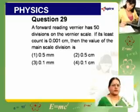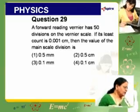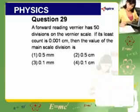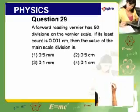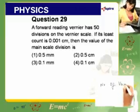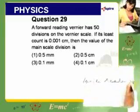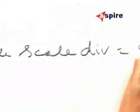This is a practical-based question. A forward reading Vernier has 50 divisions on the Vernier scale. So, the number of Vernier scale divisions equals 50.